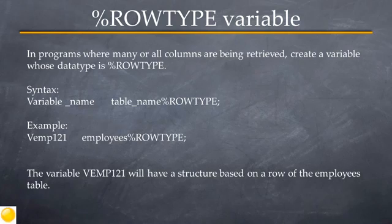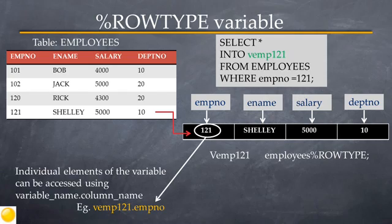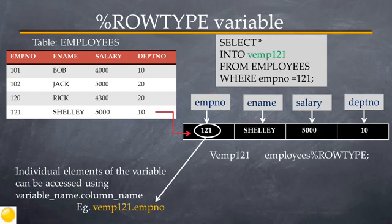For example, to create a variable called v_emp121 with a structure based on a row of the employees table, you declare its data type as employees%ROWTYPE. This variable will consist of individual elements where each element corresponds to a column. The employees table has four columns — EMPNO, ENAME, SALARY, and DEPTNO — so v_emp121 will have four corresponding elements.